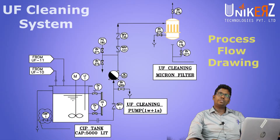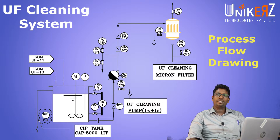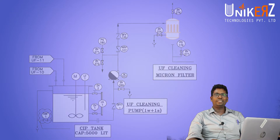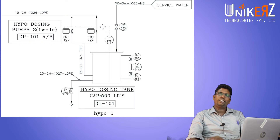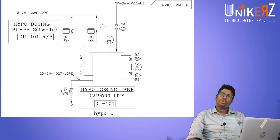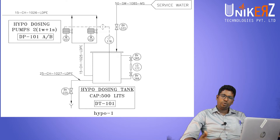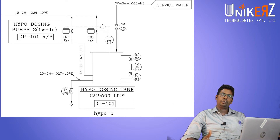The process flow drawing will explain what is the pipe, what is the instrument, how it is connected, what is the size of the pipe, what is the specification of the instrument, what is the tank size. That drawing is P&ID — from an instrumentation, electrical, and mechanical point of view.